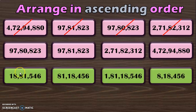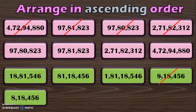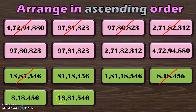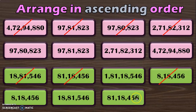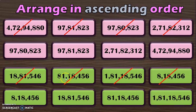Let us move to the next example where you have 1 six-digit number, 2 seven-digit numbers and 1 eight-digit number. We know that the 6 digit number is the smallest of all, so first write that down. Next, compare the two 7 digit numbers which have 1 in the 10 lakhs place and 8 in the 10 lakhs place. We know that 1 is lesser than 8. With that you conclude the next number to write down is 18,81,546. The bigger number compared to this is 81,18,456, and the biggest number of the series is 1 crore 81,18,546.